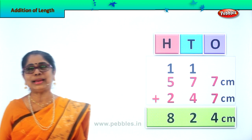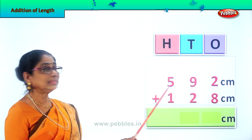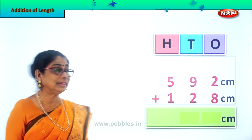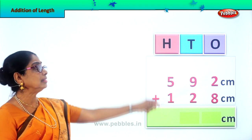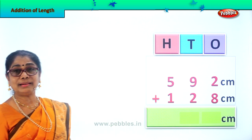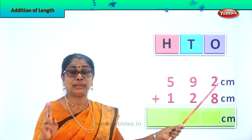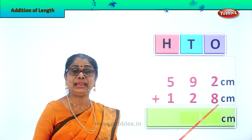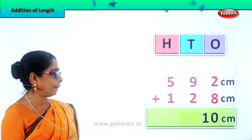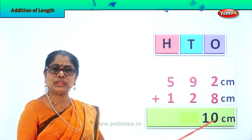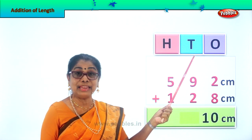Let's go on to another new sum. 592 centimeters plus 128 centimeters — you have to find the answer. The numbers are arranged in 1's, 10's and 100's. Let's add what's in the 1's place. 8 plus 2 is 10. We leave the 0 in the 1's place, take the 1 ten and bring it up to the 10's place.